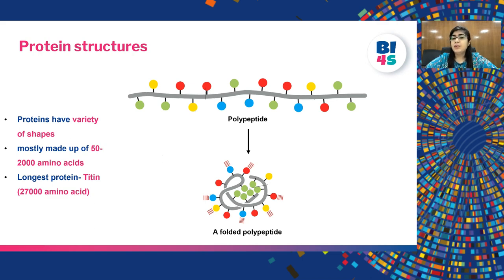The longest protein known is titin, which is present in human muscle and acts like a spring. It is made up of at least 27,000 amino acids.